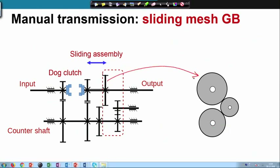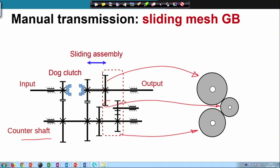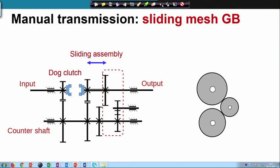This gear, which slides into mesh, is fixed on the counter shaft. When you slide the whole sliding assembly and bring this gear into mesh, there is an intermediate gear setting between the counter shaft and the output shaft which reverses the direction. This is for reverse gear.